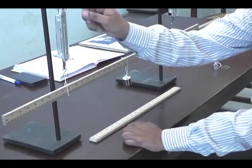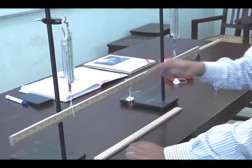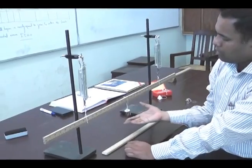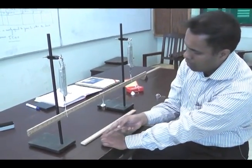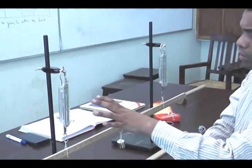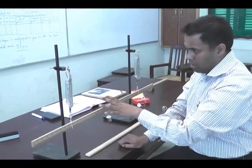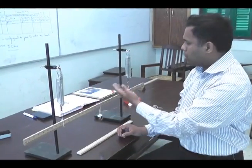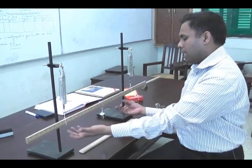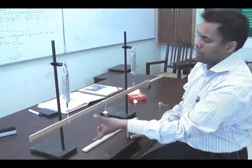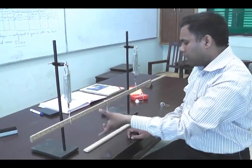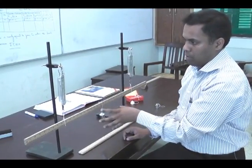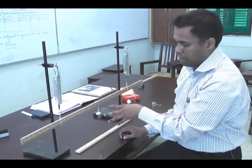Force P produces a counterclockwise torque, force Q also produces a counterclockwise torque, whereas this weight W — the weight of the meter rod plus the external weight, force F — produces a clockwise torque. Theoretically the sum of these three torques must equal zero. However in a lab experiment there are limitations: calibration of spring balances, non-uniform mass distribution of the meter rod, and other sources of error. So practically the answer is nearly equal to zero, not exactly zero.